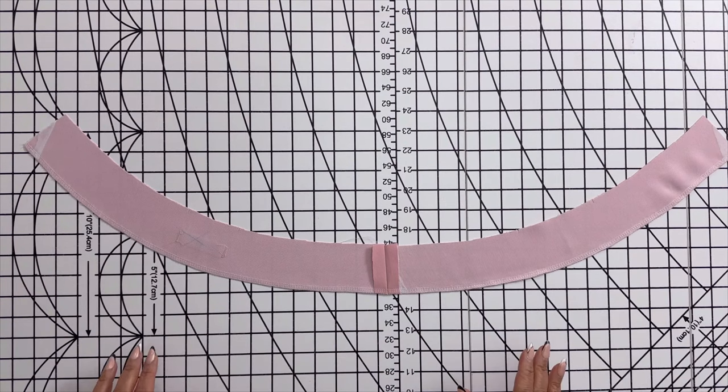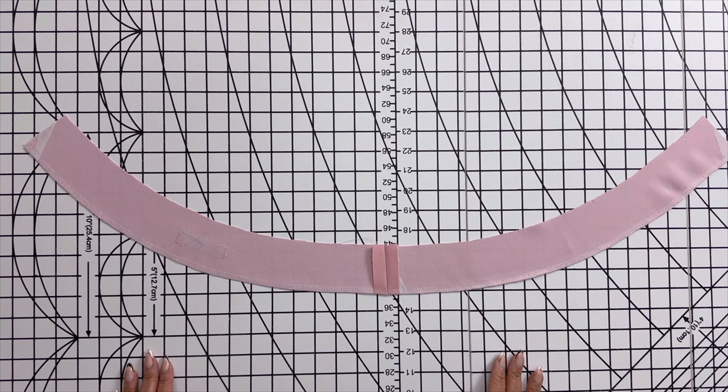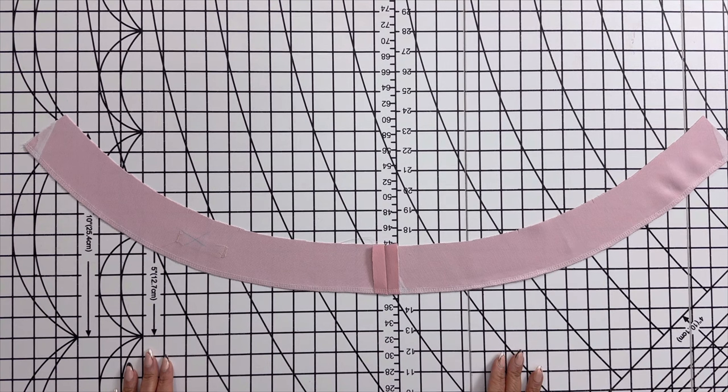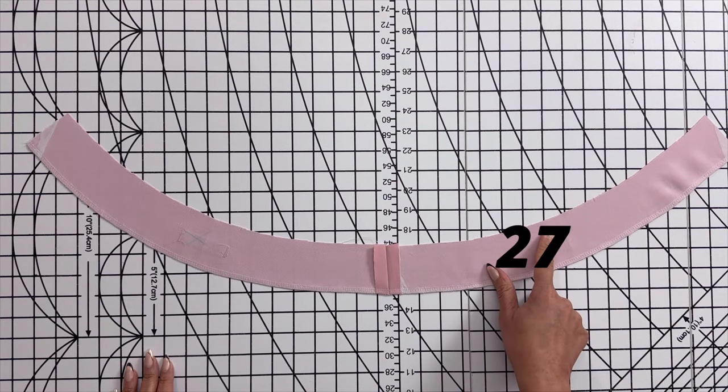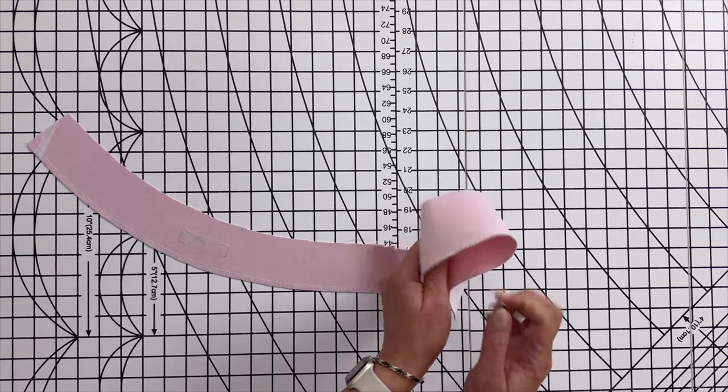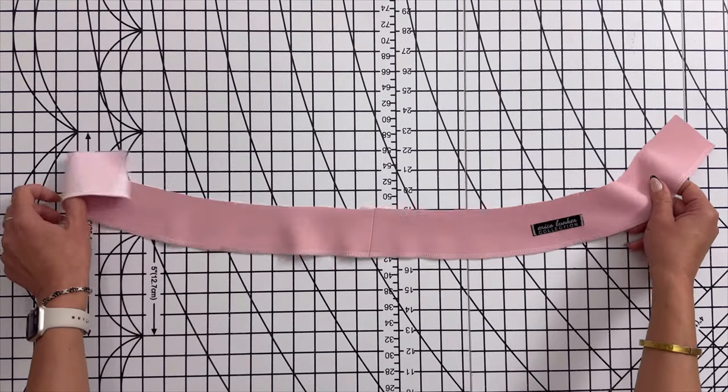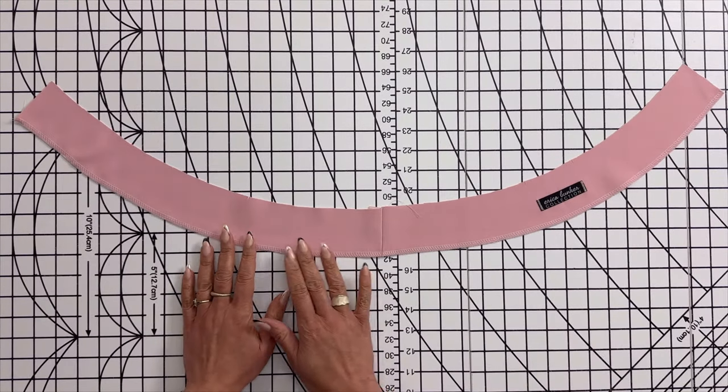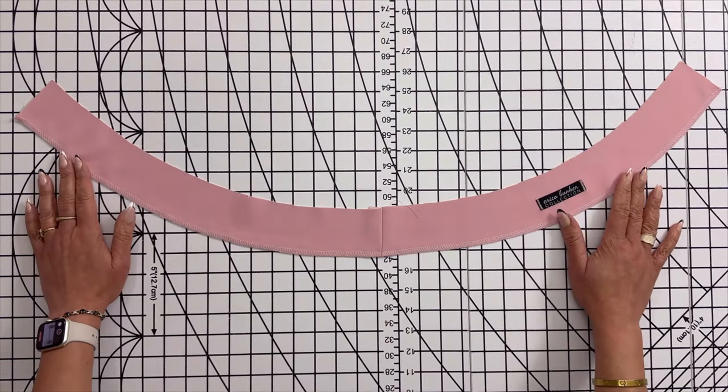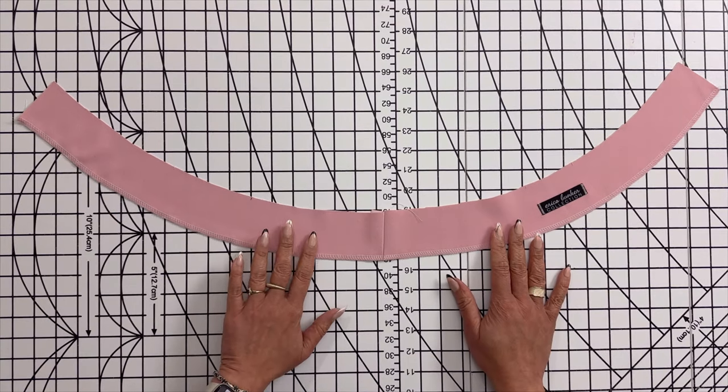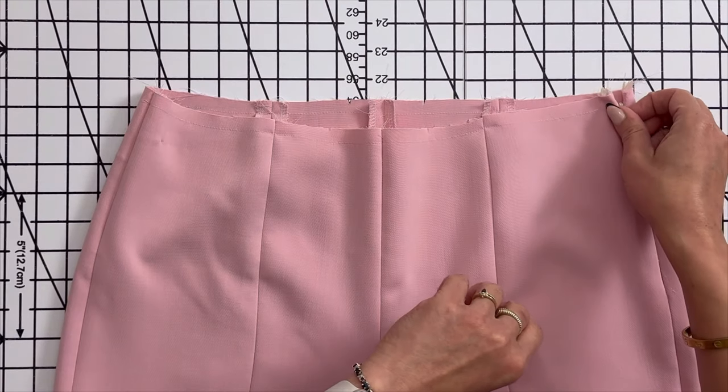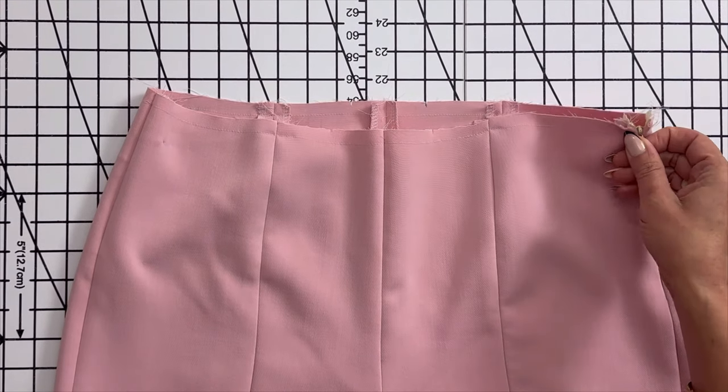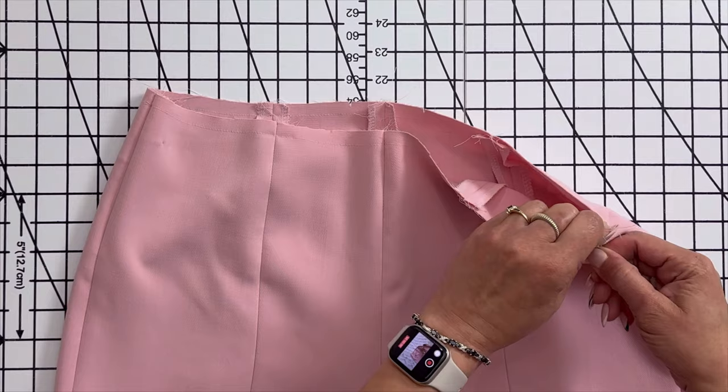Okay, I've gone ahead and sewn the waistband pieces together. This is 28 the back and this is 27 the front. And I finished off the raw edge with a serger stitch. Now we're going to go ahead and pin this to the pants. With the pants turned to the right side, go ahead and unzip the zipper.